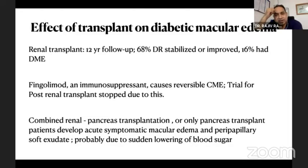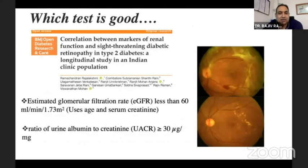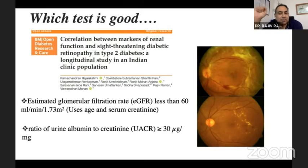As far as the effect of transplant, we had a large series from Shankar-Netralaya showing a 12-year follow-up that it stabilizes diabetic retinopathy. If there is combined renal-pancreas transplantation, there can be quick hypoglycemic episodes and worsening of retinopathy. Which marker to look for in renal parameters? From a large MV diabetes series we analyzed, for PDR, eGFR is an important factor, and for diabetic macular edema, it is the urine albumin-to-creatinine ratio.